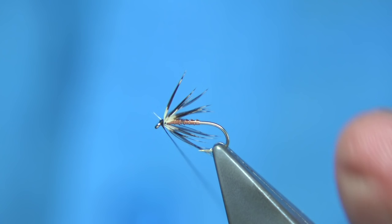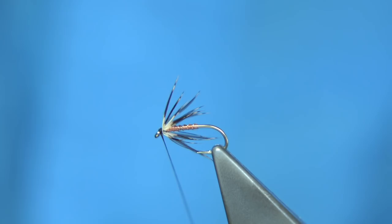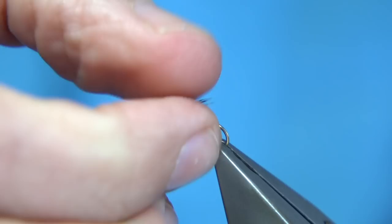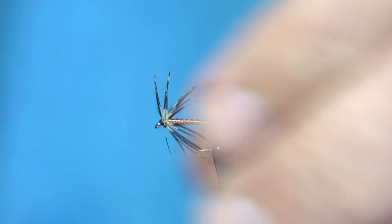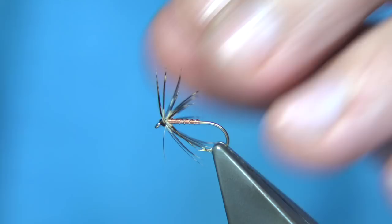And then what I'm going to do is whip finish. Trim away the thread. It's quite simple, you can see it makes for a lovely hackle that, these little feathers have a nice mark on them.